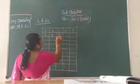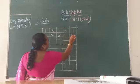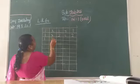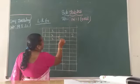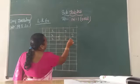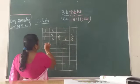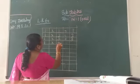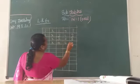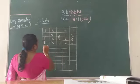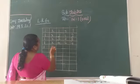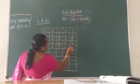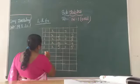1 × 2 = 2. Say children: 1 × 2 = 2. 1 × 3 = 3. Say children: 1 × 3 = 3. 1 × 4 = 4. 1 × 4 = 4. 1 × 5 = 5. 1 × 5 = 5.